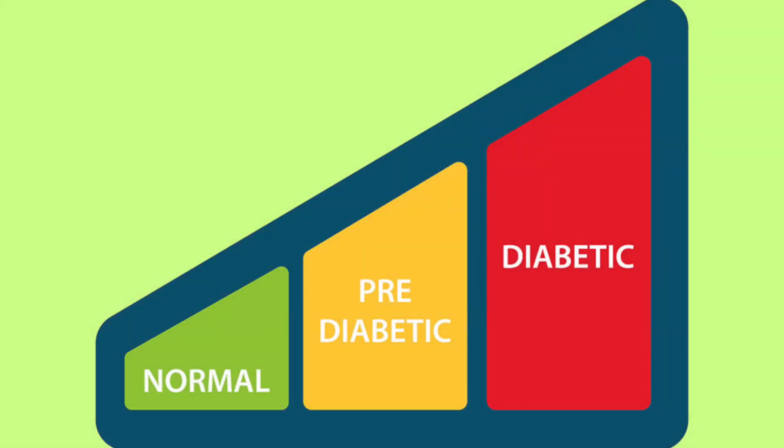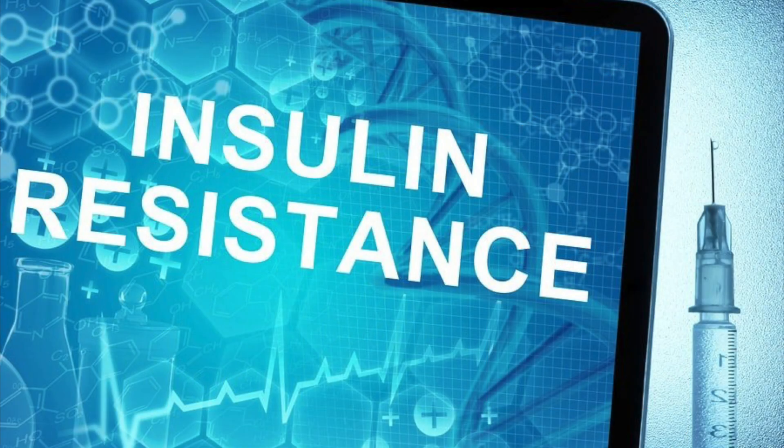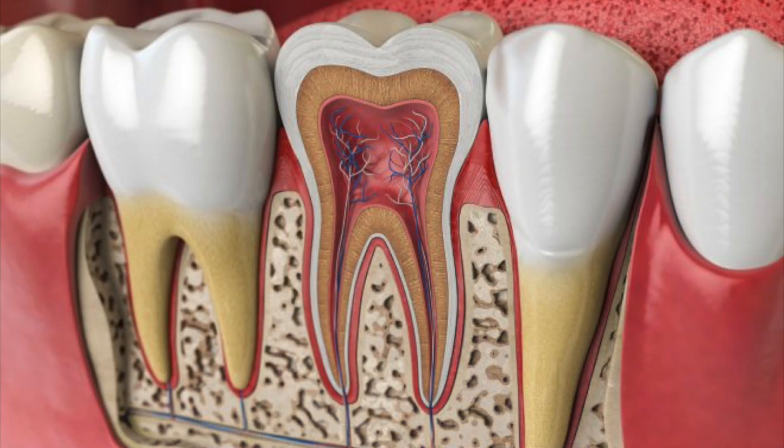You really want to look at this problem as a systemic problem. If someone is diabetic, pre-diabetic, or has insulin resistance from consuming a lot of carbs, we're dealing with a chronic level of high blood glucose, which does come into the teeth indirectly through the roots. Your teeth have a blood supply. High blood sugars are a systemic cause of tooth breakdown as well — from the inside out.